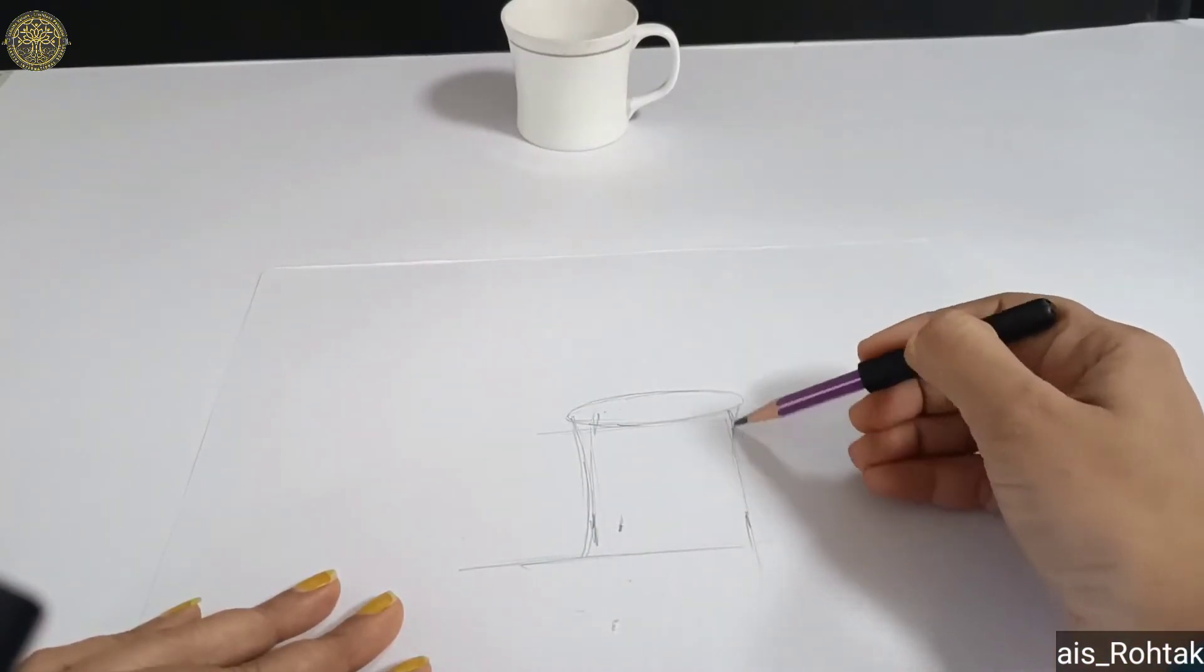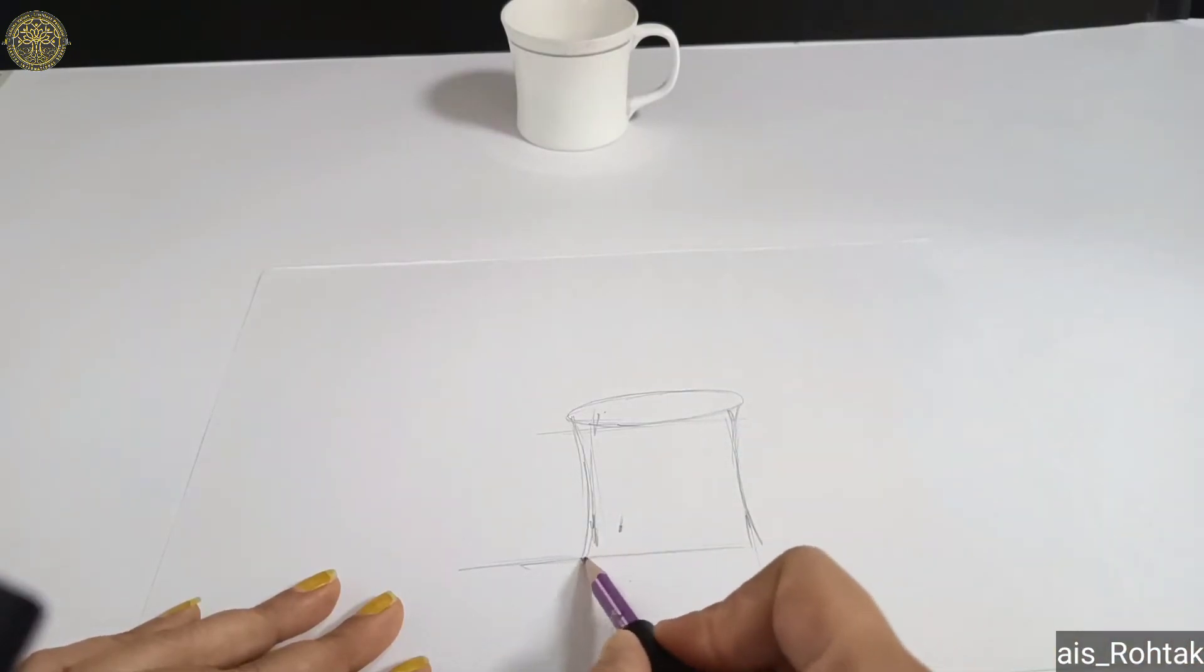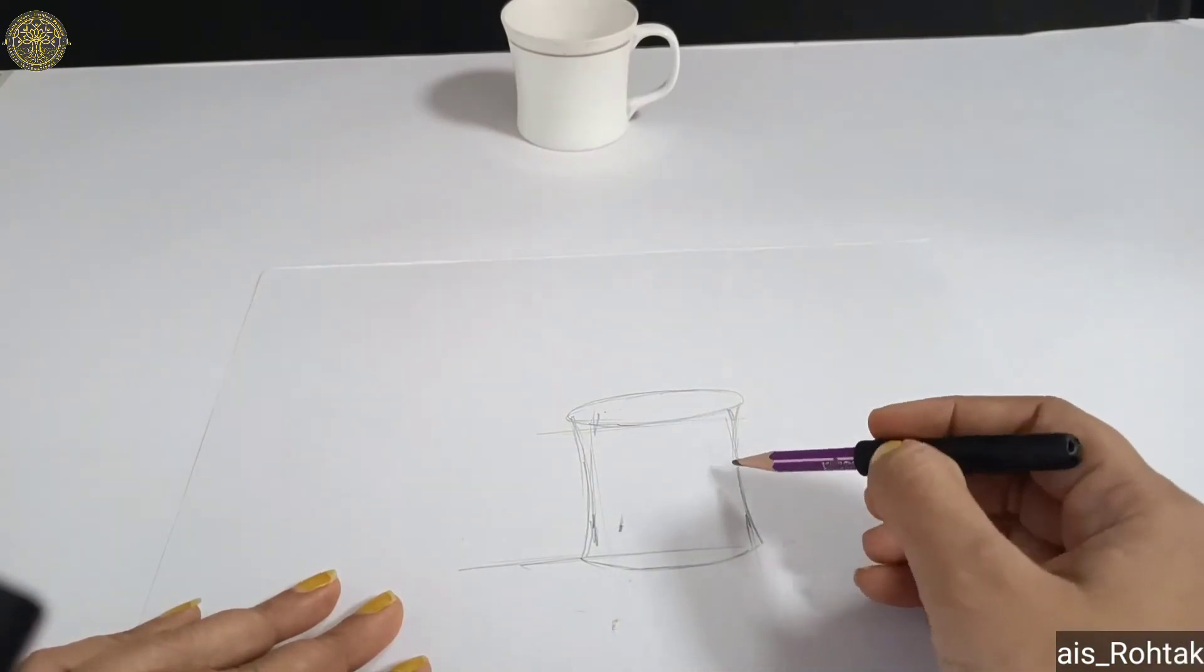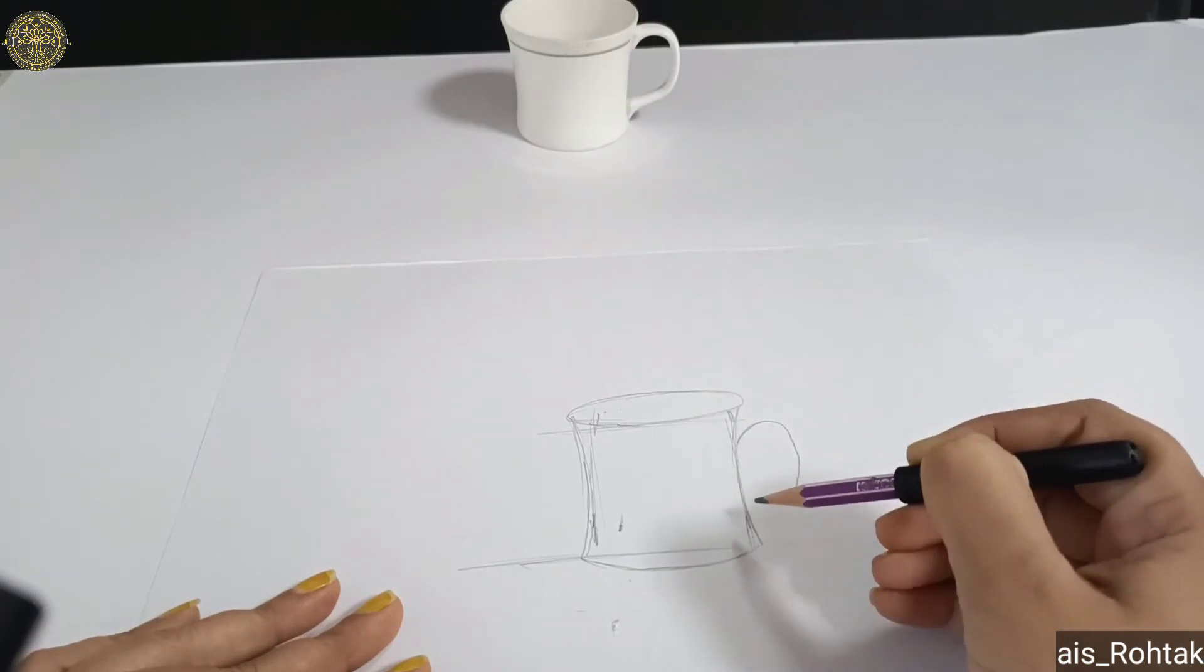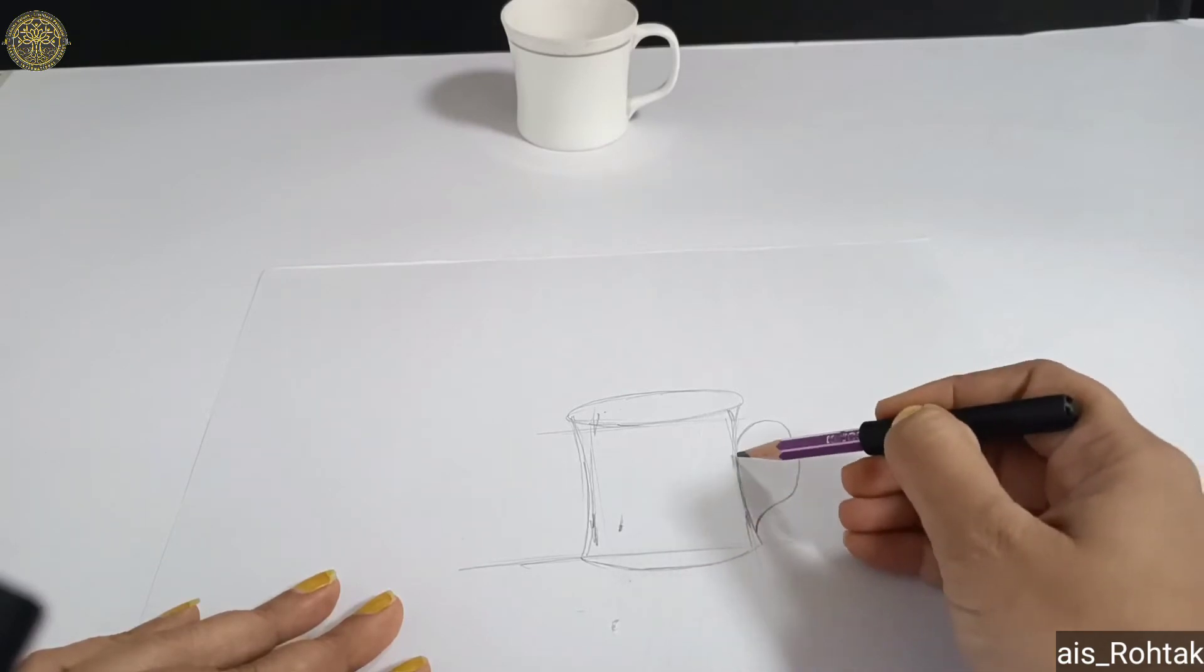Now draw a curve line for the base of the cup. Now draw the cup handle. First, we have to draw a basic handle, and then we give it proper shape.